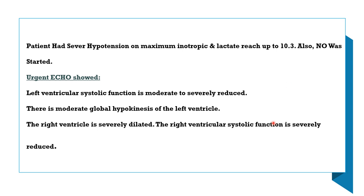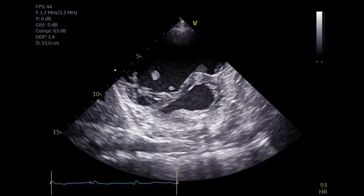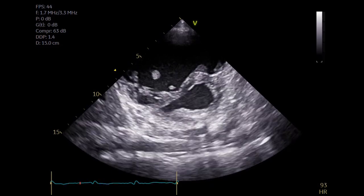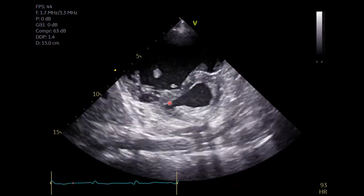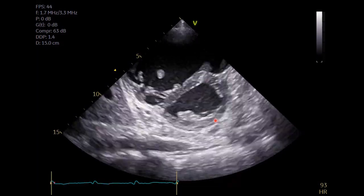An urgent echo post-cardiac surgery showed that left ventricular systolic function was mild to moderately to severely reduced, with moderate global hypokinesia of the left ventricle. The right ventricle was severely dilated, and right ventricular systolic function was severely reduced. We noted the same D-shape of the septum and reduction in left ventricular function.